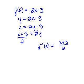Let's verify these two are inverses informally. From the first function, we take the input, double it, subtract 3. The inverse takes a value, adds 3, and divides by 2. You can see how those two undo each other.